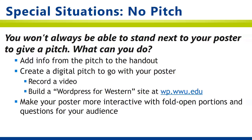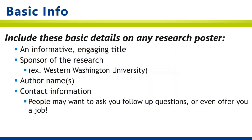Now that we know what the different components of a research poster are, we want to figure out what actually belongs on that poster. And the answer is not very much at all. You do want to include some basic info, such as an informative and engaging title, the sponsor of the research — which might be Western Washington University — and your name and the name of any other authors of the research.